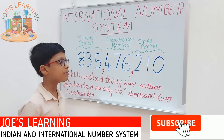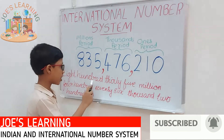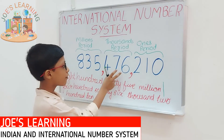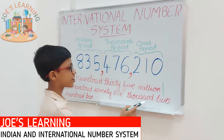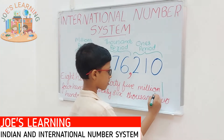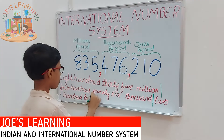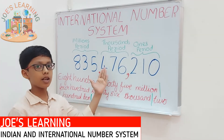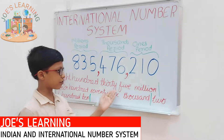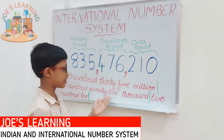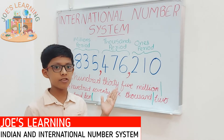Based on these periods, we can write the number name. It will be 835 million, then 476 thousand, then 210 in the ones period. So the full number name is 835 million 476 thousand 210. In the same way we can read or write any number using the international number system.